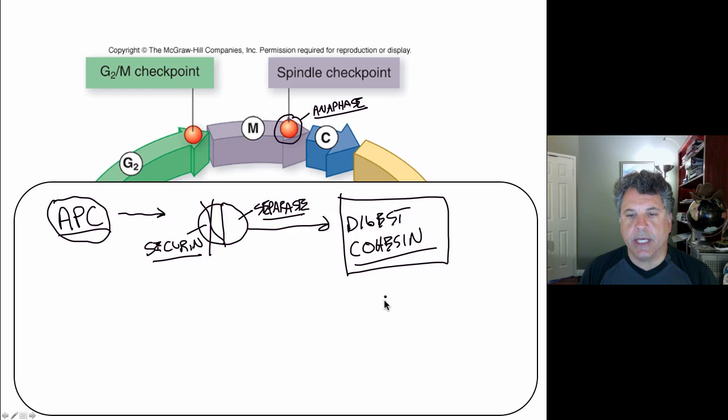And at that point, when cohesin is digested, these are two sister chromatids here. The force pulling them apart by microtubules that in anaphase A are going to shorten and drag the chromatids apart from each other can occur. Because when cohesin is digested, then there's nothing holding the sister chromatids together and the tension applied by the spindle apparatus to each chromatid can come into play and they will then move to opposite poles.